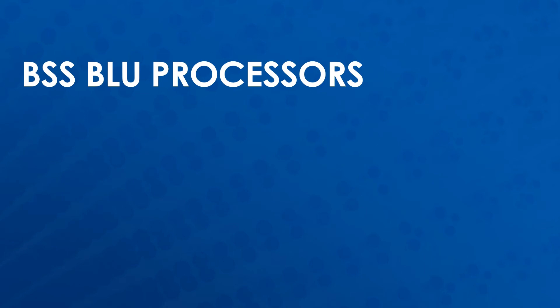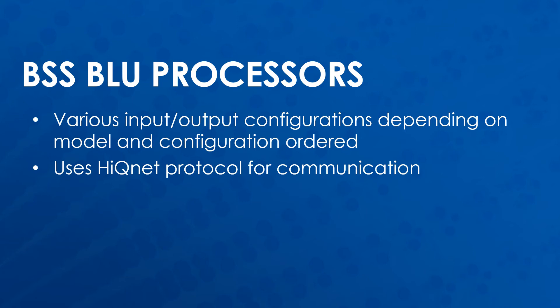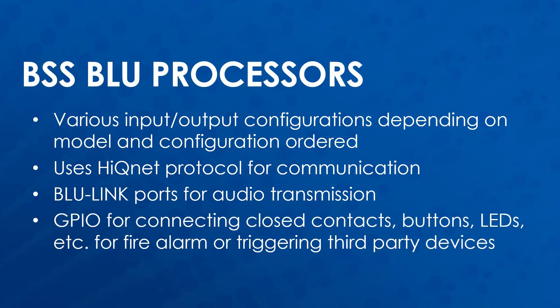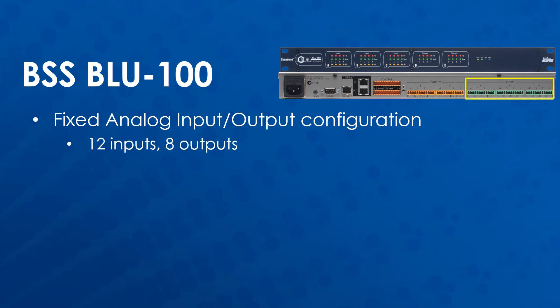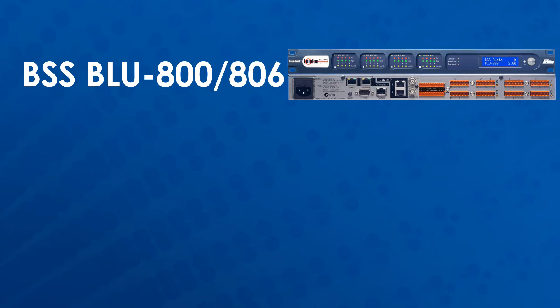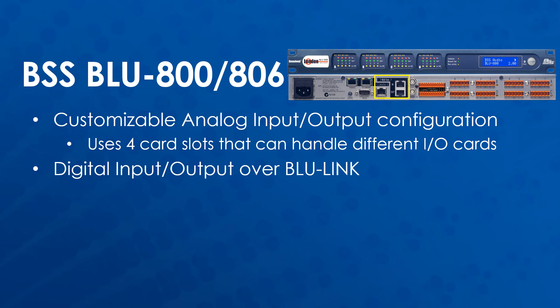Similar to QSC's core processors, the BSS Blue series is available in various input and output configurations depending on which model and configuration is ordered. The Blue processors use the Harman HiQnet protocol for communication and Blue Link for audio transmission. The processors also have GPIO capabilities for things like closed contacts, buttons, LEDs, fire alarm integration, or remote triggers. The Blue 100 has a fixed input-output configuration consisting of 12 inputs and 8 outputs. It can also send and receive additional channels over the Blue Link ports from other devices with Blue Link capabilities.